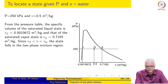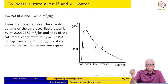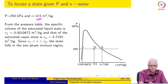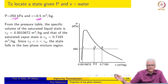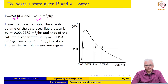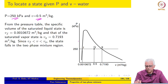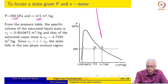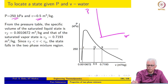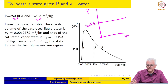Let us see how to locate the state given P and V. Here we are given specific volume and pressure. What we try to do is the following. Before we go through this figure, let us see what we want to do. Let us say that this is our PV coordinates. The isobar corresponding to 250 kPa is drawn here.